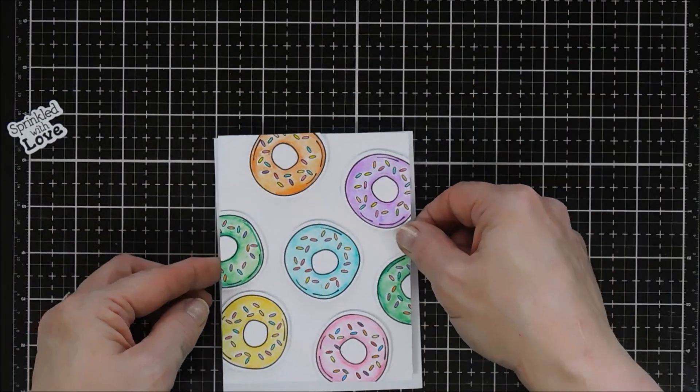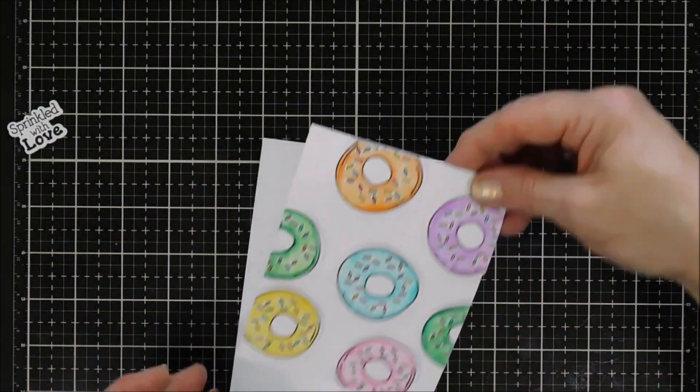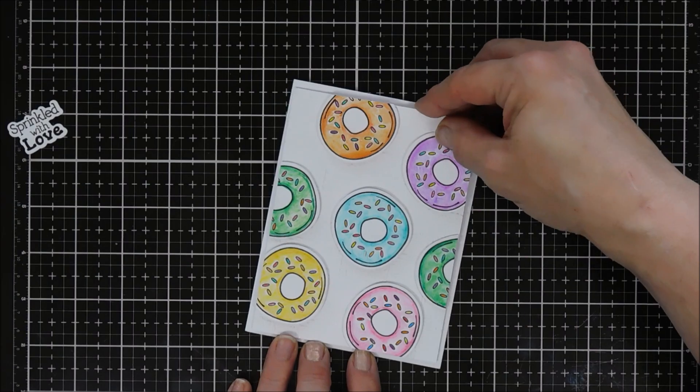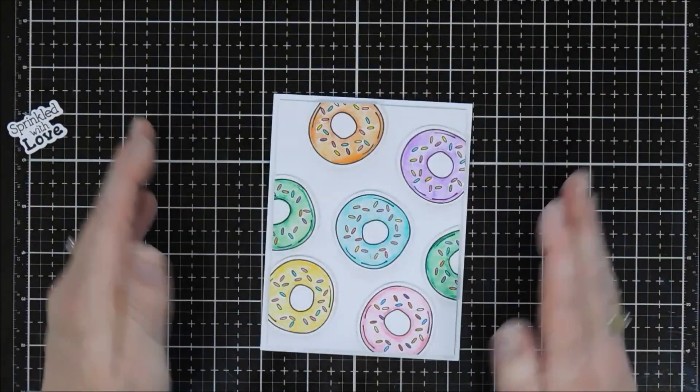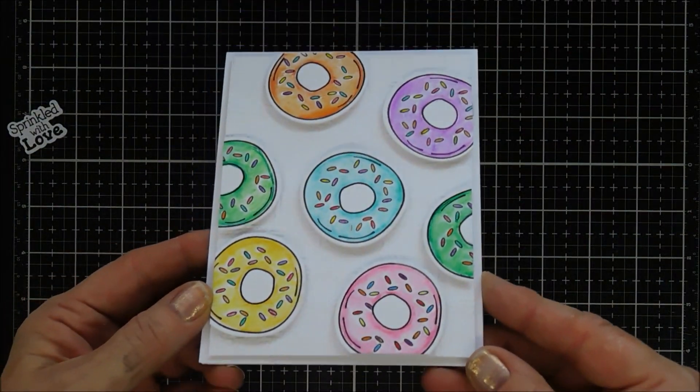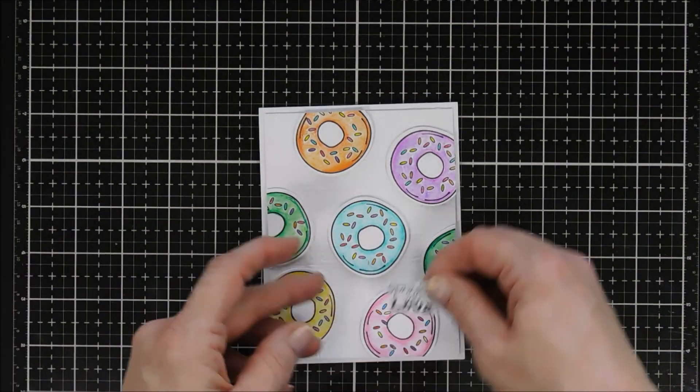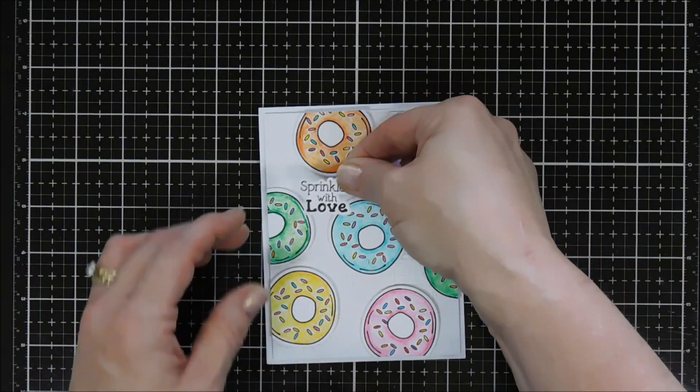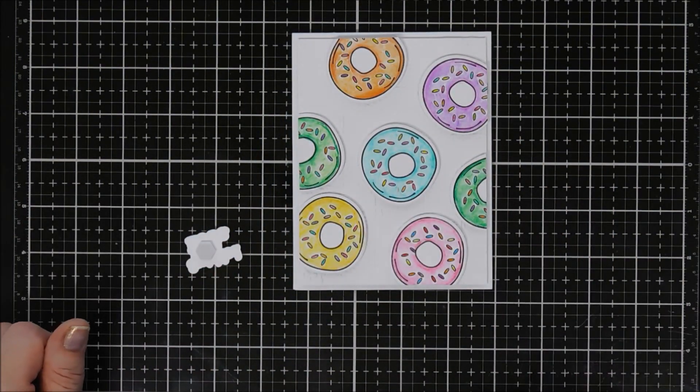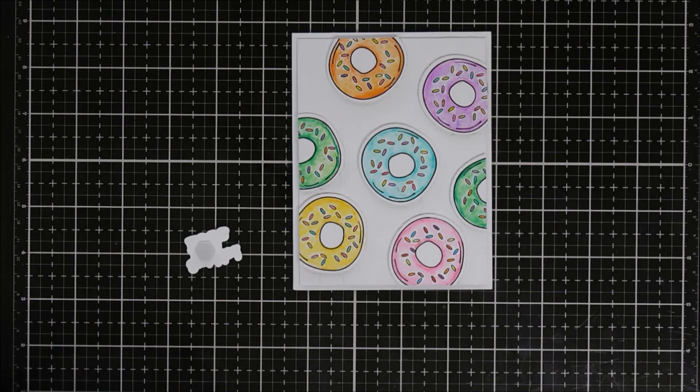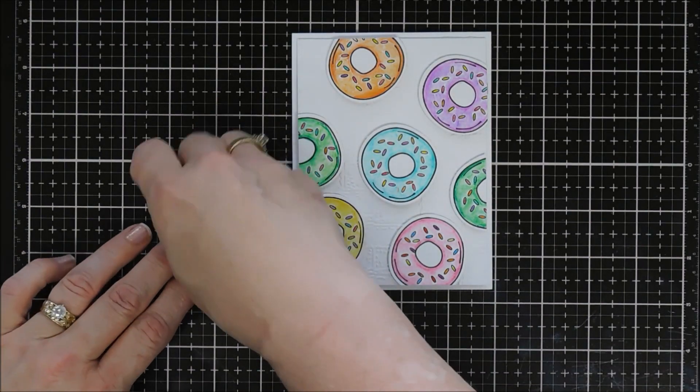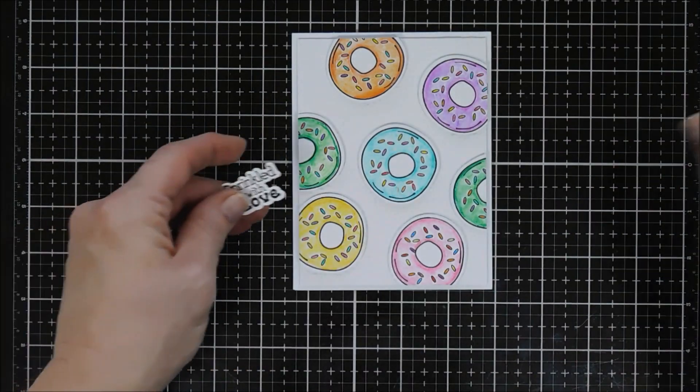I love the bright vibrant colors of these donuts. We'll place that in the center. For my sentiment, I already added a piece of foam tape behind it, but I want it one level higher than my donut, so I'm going to add one more dimensional adhesive piece. Then this is going to go overhanging one of our little blue donuts there. Such a fun card. Love sprinkles.